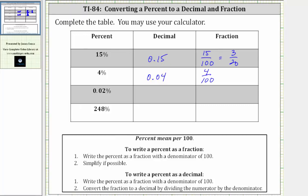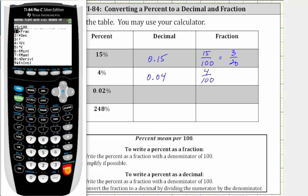And now to find the simplified fraction, we press math, enter, enter, enter, which gives us 1 25th.